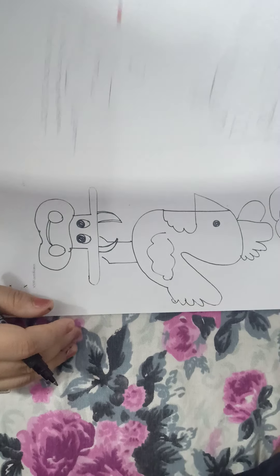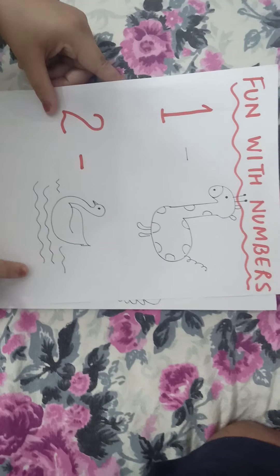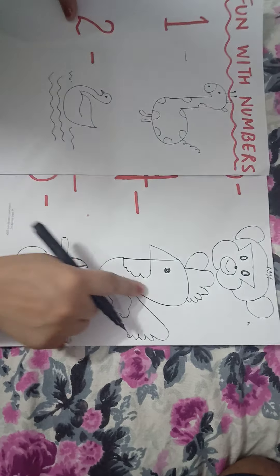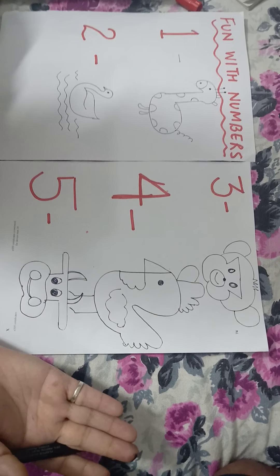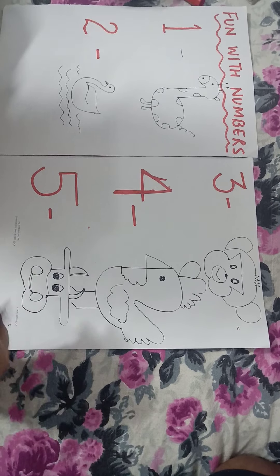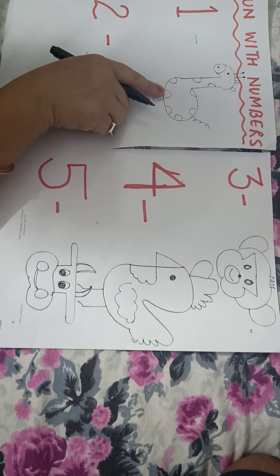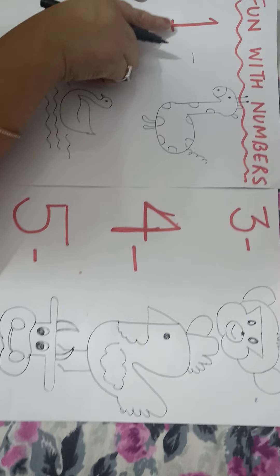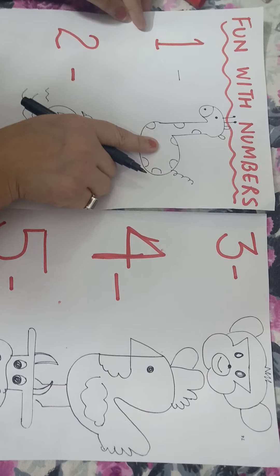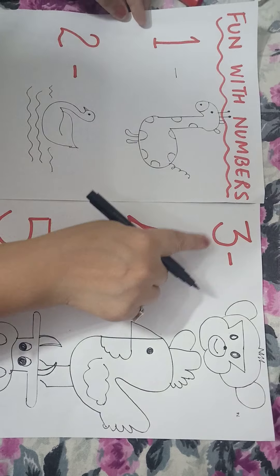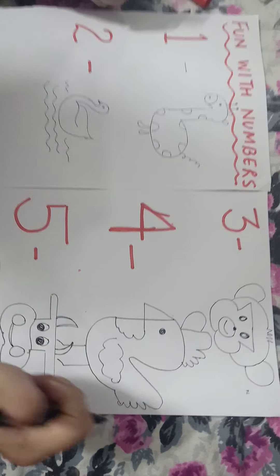Children, you can fill colours also — in the giraffe, duck, and other animals you can fill colours. So children, what have we done today? Numbers activity — fun with numbers! We have drawn animals using different numbers from 1 to 5. I hope you enjoyed the activity.